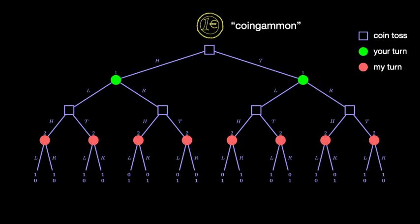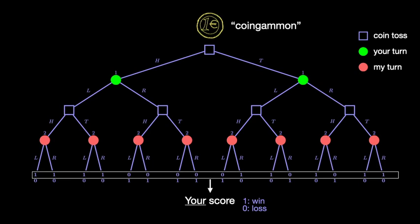Spoken words fly away, so let me give you a concrete example. This game tree illustrates the so-called CoinGammon game, which is perhaps the simplest abstract game that mimics backgammon. First, you flip a coin and observe the outcome, which could be heads or tails, and then choose left or right. After that, I flip a coin, observe the outcome, and choose left or right.